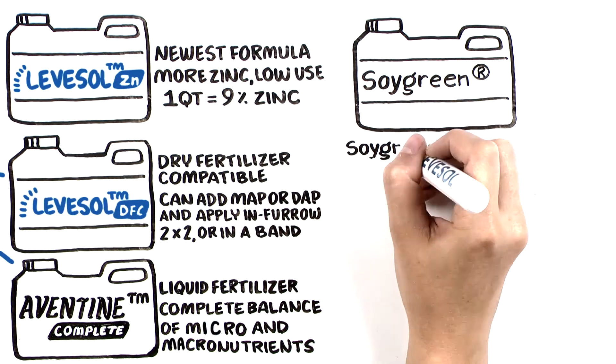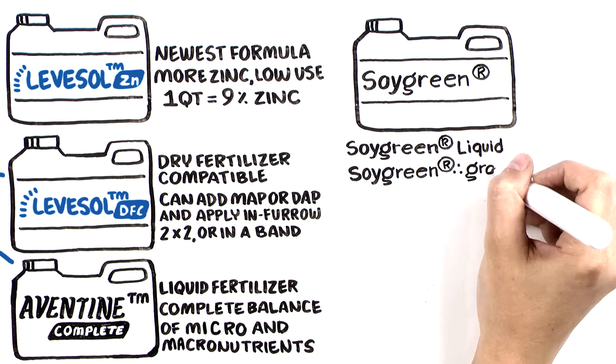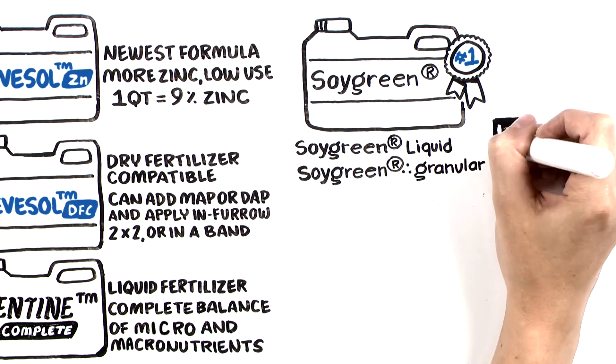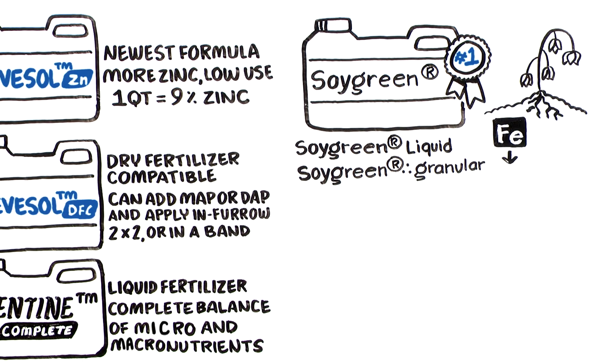Soy Green, Soy Green Liquid, and Soy Green Granular are the number one product solutions for overcoming iron deficiency chlorosis in soybeans by providing more available and efficient iron.